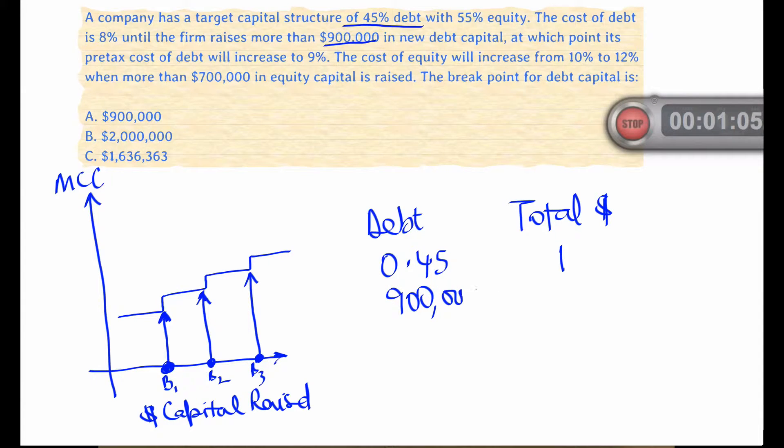So how much total capital corresponds to $900,000 of debt? We solve this by dividing 900,000 by 0.45 to get two million dollars, which makes B the correct answer.